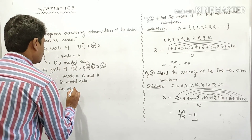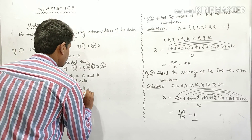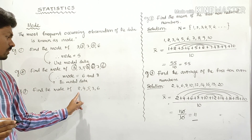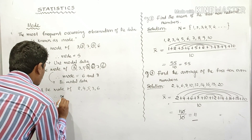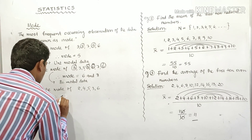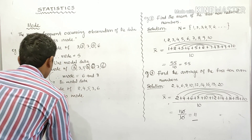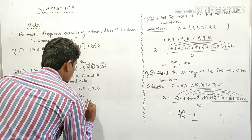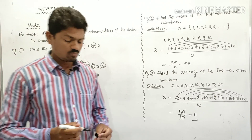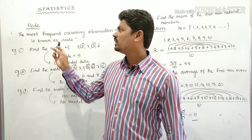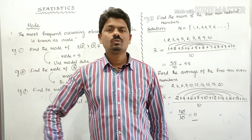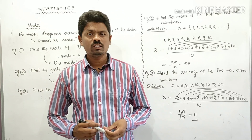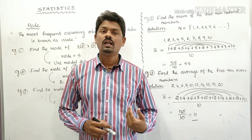Example three: Find the mode of 2, 4, 5, 3, 6. Here no number is repeated; all appear only once. Therefore there is no mode for this data. This is called no-mode data. In the next part we will learn about finding the median of ungrouped data. Subscribe to my channel, Learn More Math, for more updates.